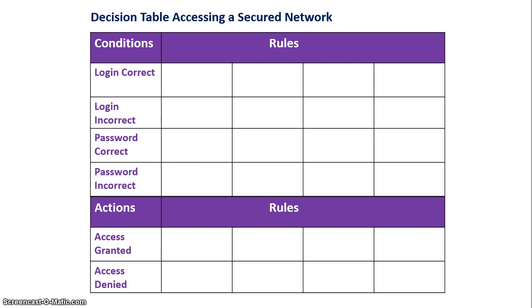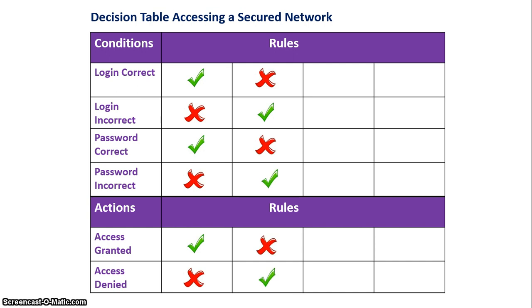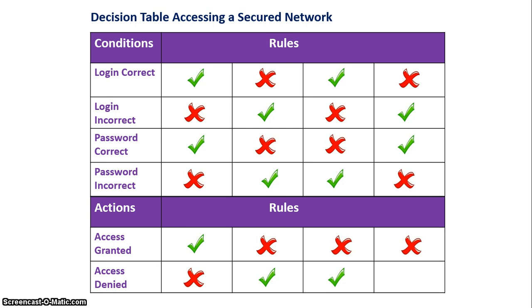In the first scenario, I'll have the correct login and the correct password, and I'll get access to the network. Any other scenario where either I get the login wrong or the password wrong will not let me into the network. Decision tables help us establish what scenarios need to be fulfilled in order for a specific outcome to take place.